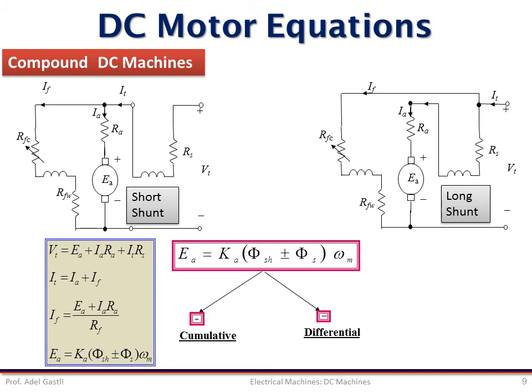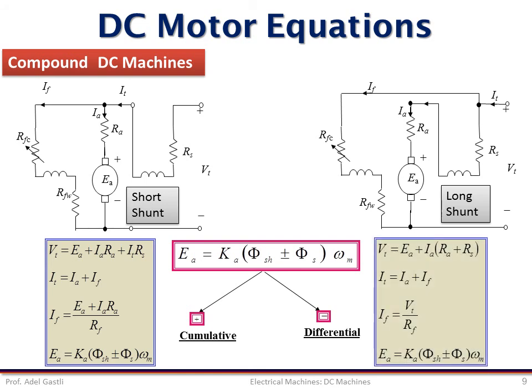The equations of the short shunt are shown here, and the equations of the long shunt are shown here. These equations can be easily obtained using the KVL and KCL to the different circuits. For instance, this equation is obtained from KVL applied to this loop. However, this one is obtained using the KCL at this node, while this equation is obtained from the KVL for this loop. The same approach can be applied to find the equations of the long shunt compound type DC machine.